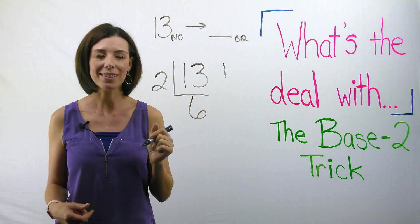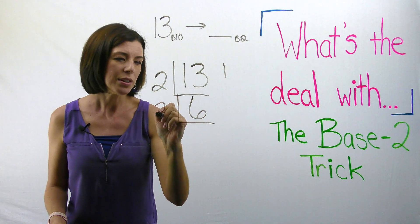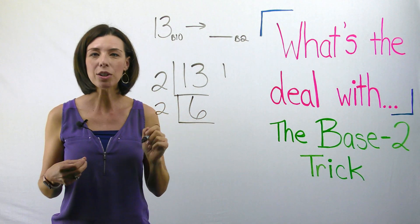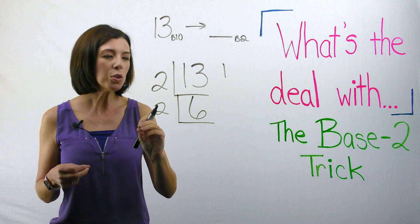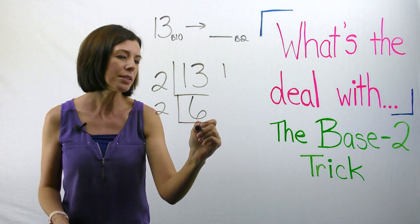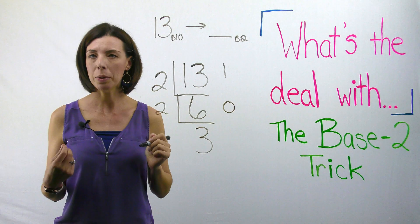Now I go to the next step. I'm going to do it again. So now I am dividing six by two. I know that two goes into six three times and I have zero remainder.